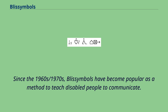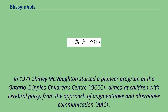Since the 1960s–1970s, Bliss Symbols have become popular as a method to teach disabled people to communicate. In 1971, Shirley MacNaughton started a pioneer program at the Ontario Crippled Children's Centre, aimed at children with cerebral palsy, from the approach of augmentative and alternative communication.